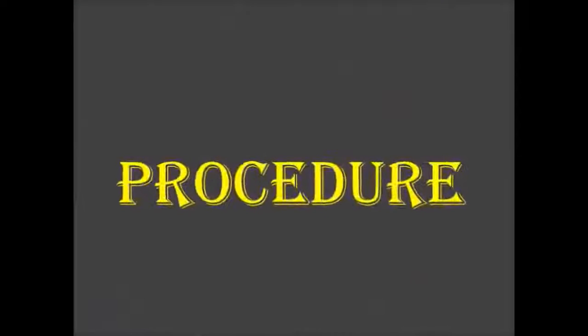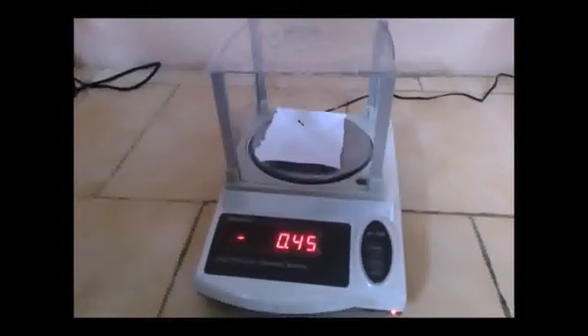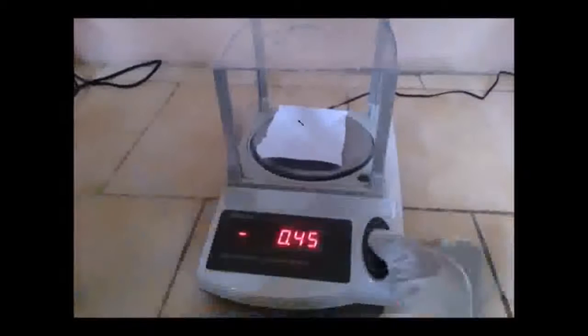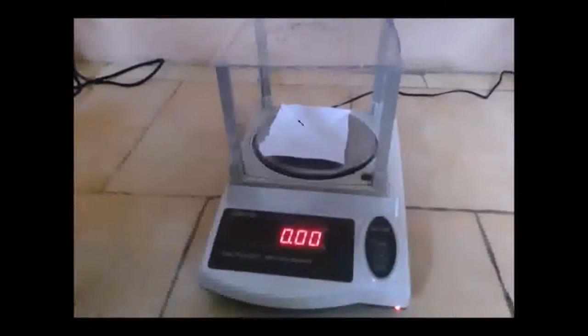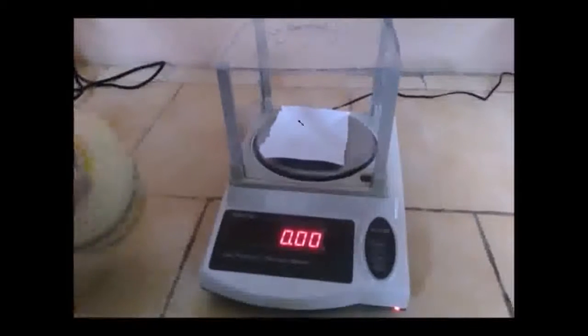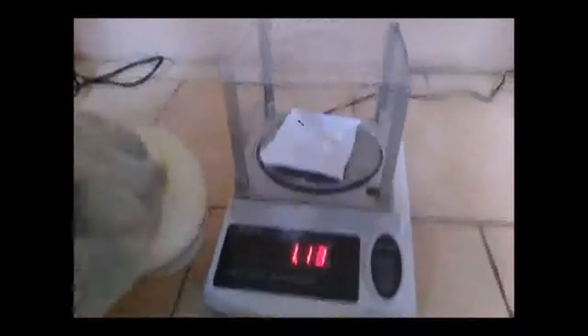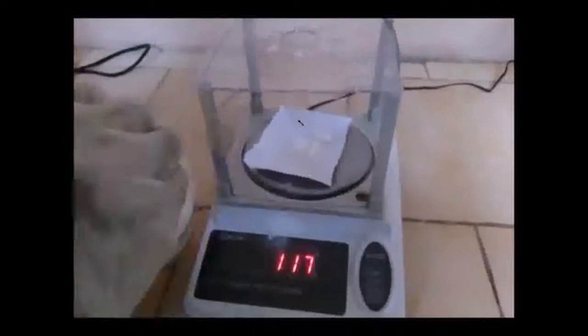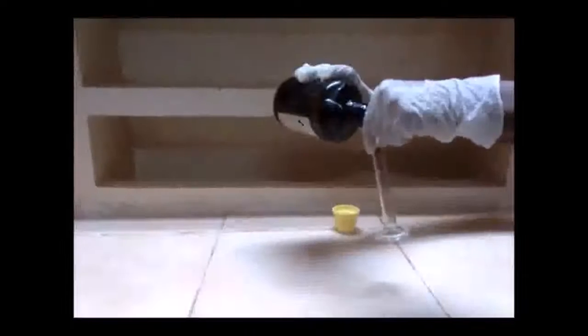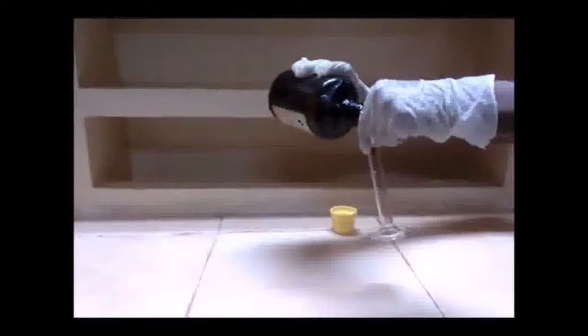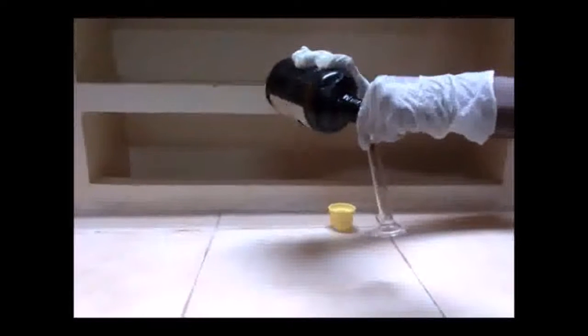Synthesis of Aspirin starts with zeroing the weighing balance. Weigh 2g of salicylic acid on a tared weighing balance. Now measure 4ml of acetic anhydride.